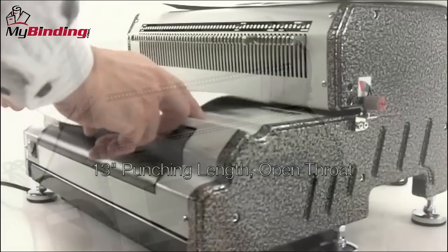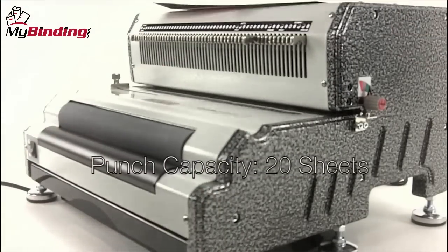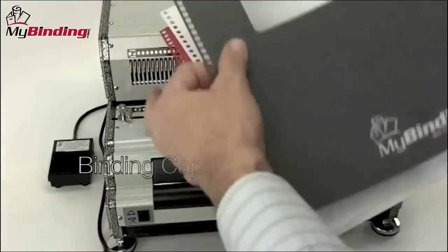It is an open throat design, so with some creativity, there's no limit on paper size. The motor on this electronic punch can handle up to 20 sheets of 20-pound paper per lift.